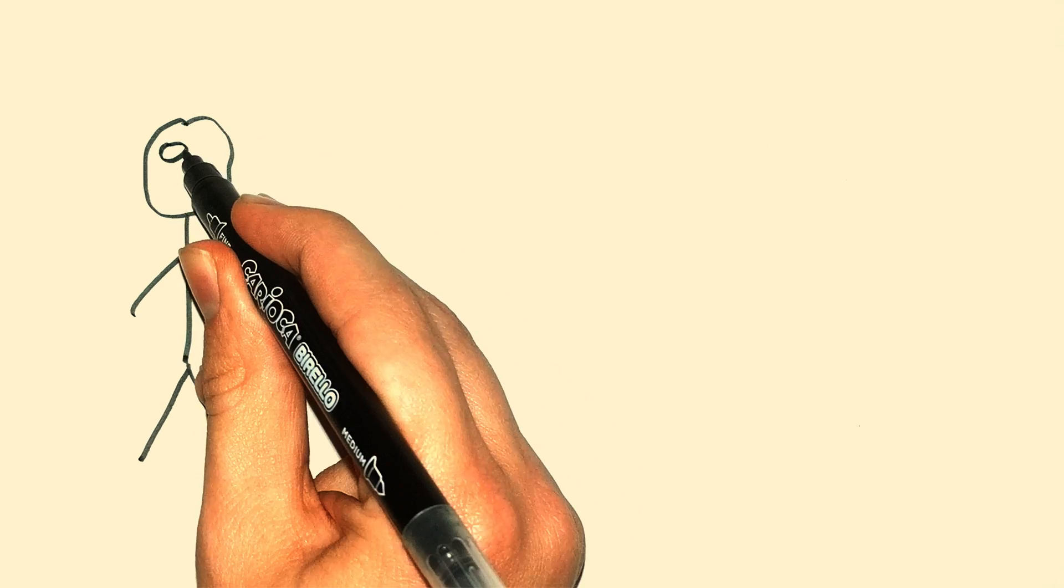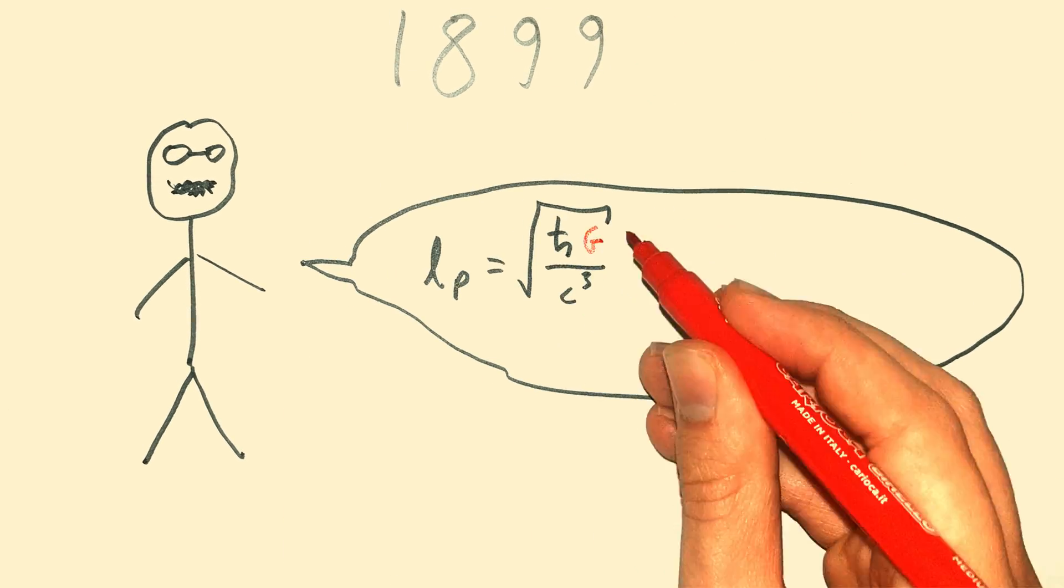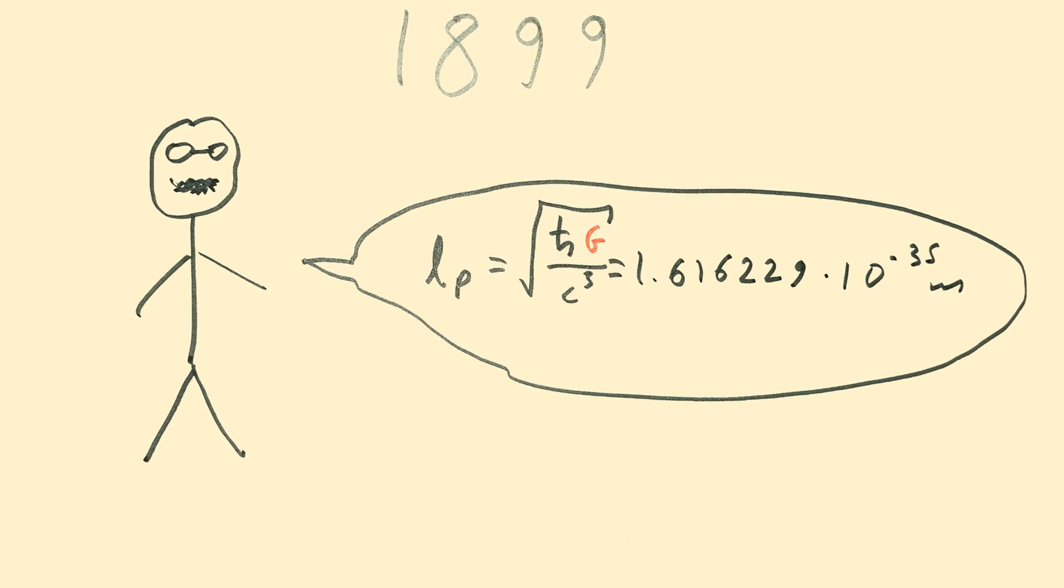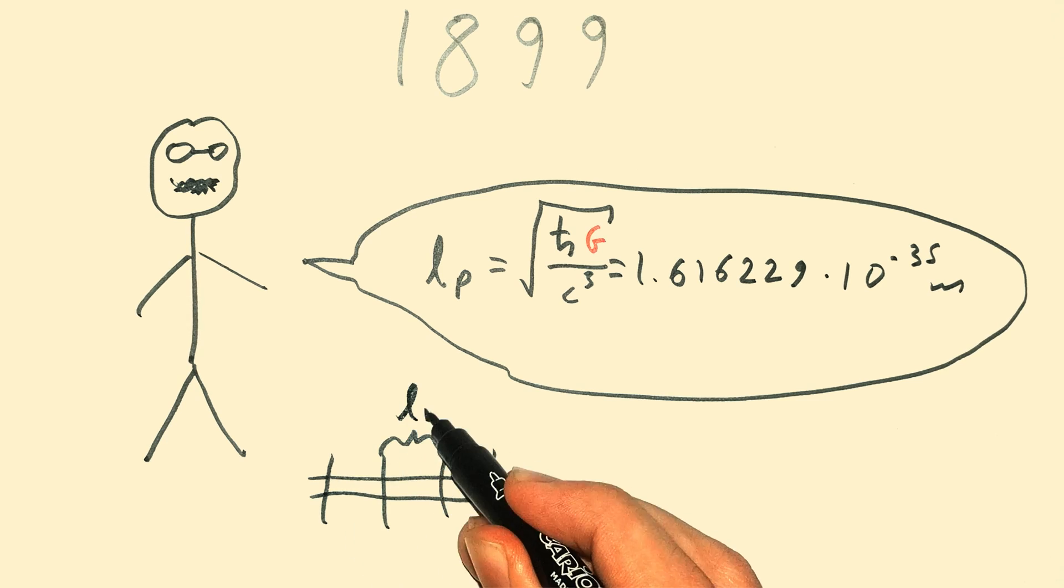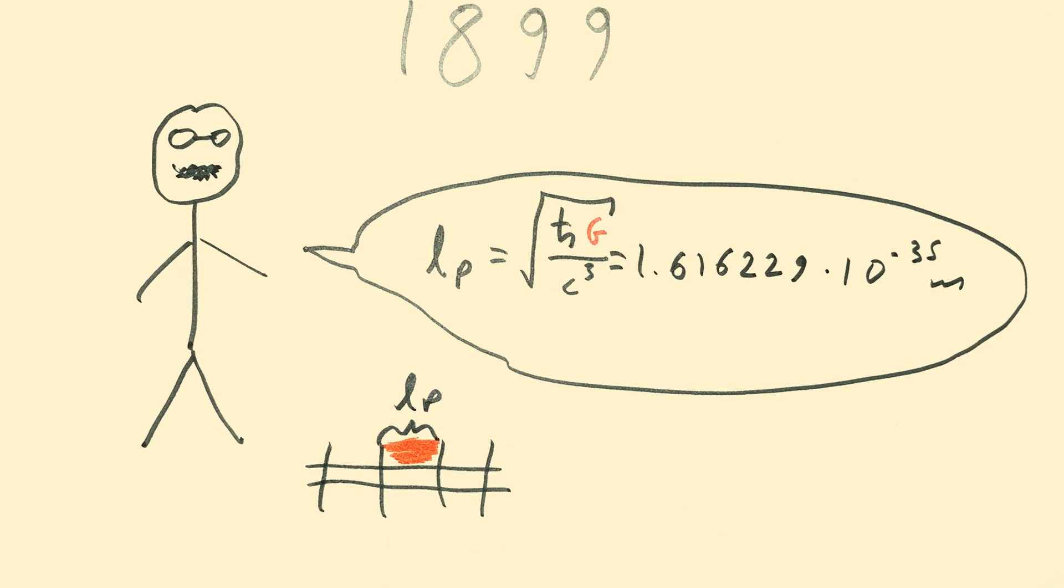G was also used by Max Planck in 1899 in his definition of the Planck length. The Planck length is supposed to be the shortest length possible, according to modern physics. Physics doesn't make sense when distances get smaller than that, and you need G to calculate it.